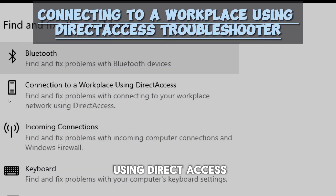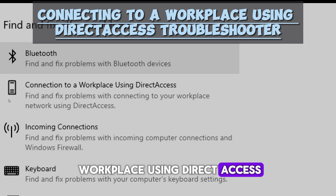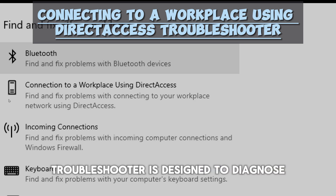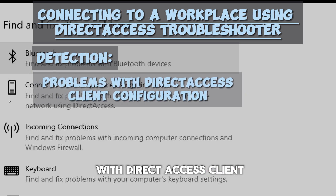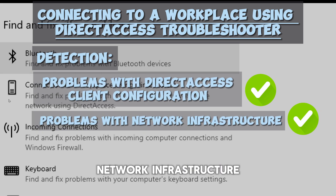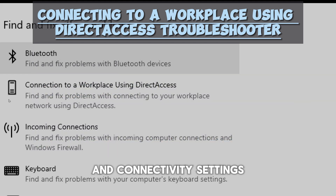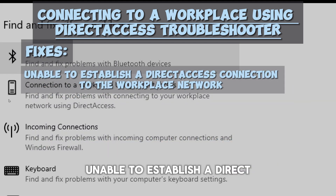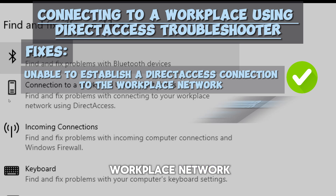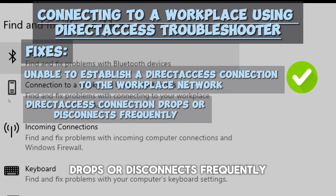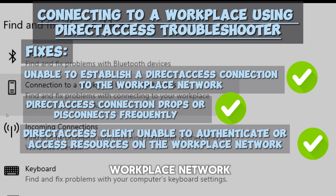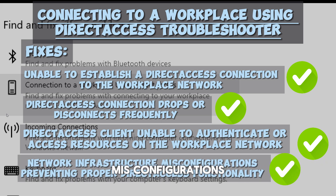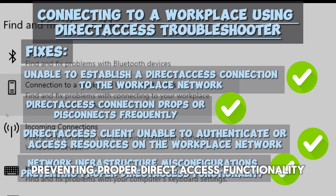The Connecting to a Workplace Using Direct Access troubleshooter is designed to diagnose and resolve issues related to establishing a direct access connection to a workplace network. It can detect problems with direct access client configuration, network infrastructure, and connectivity settings. Common issues include unable to establish a direct access connection, connection drops or disconnects frequently, client unable to authenticate or access resources, and network infrastructure misconfigurations.